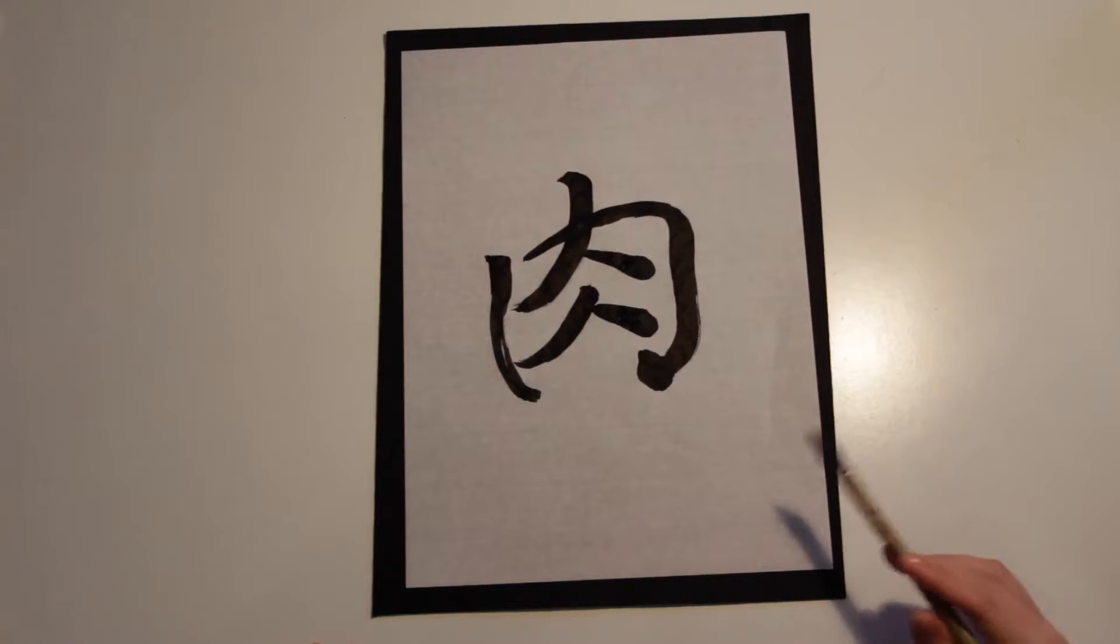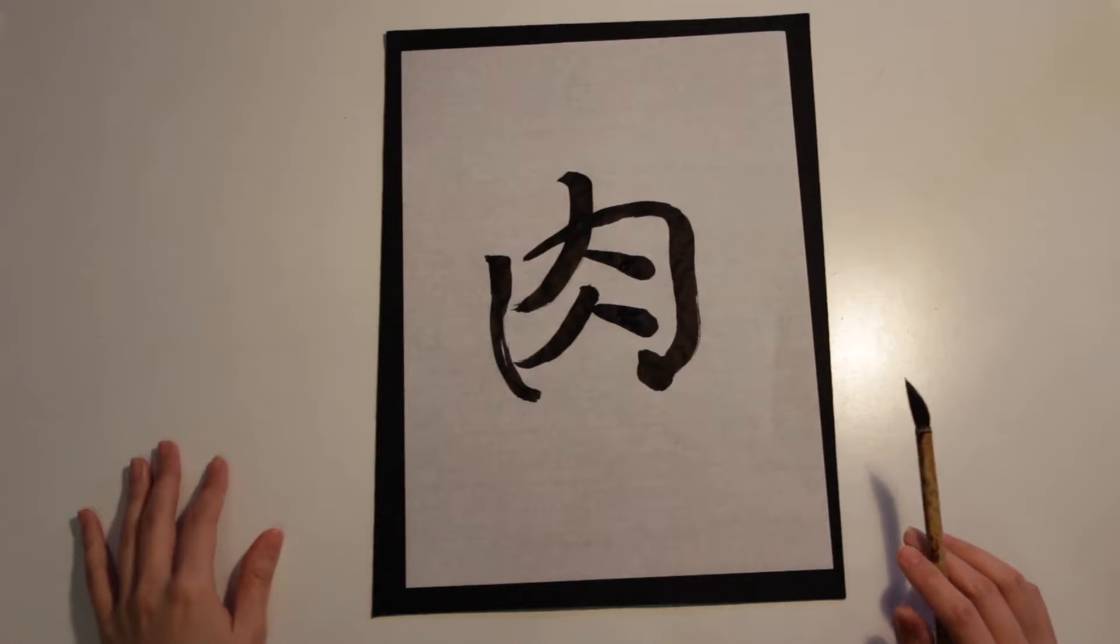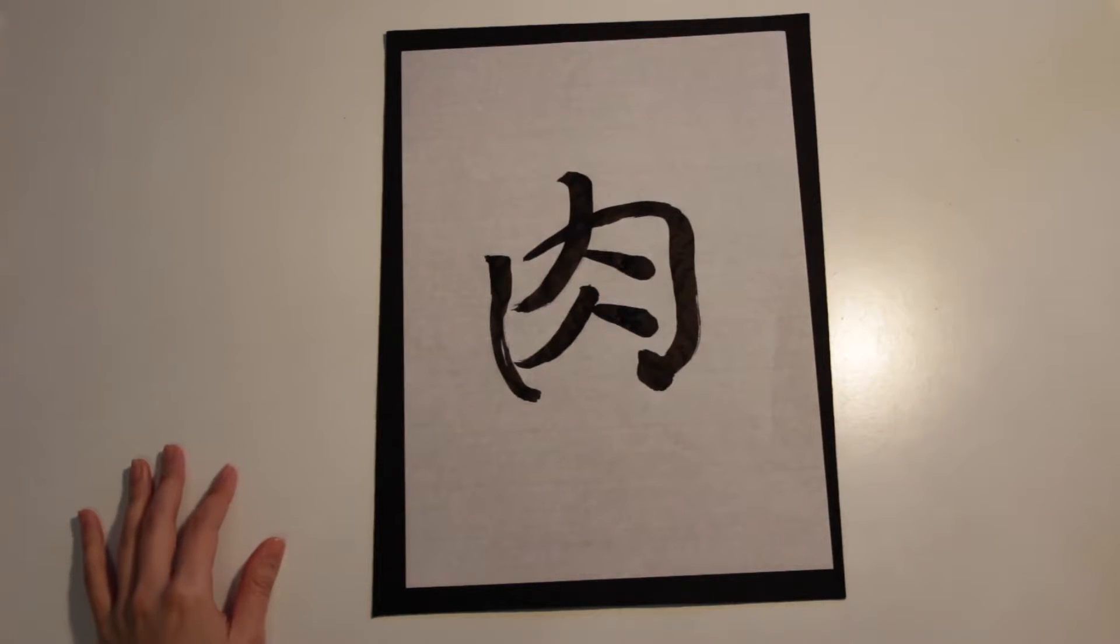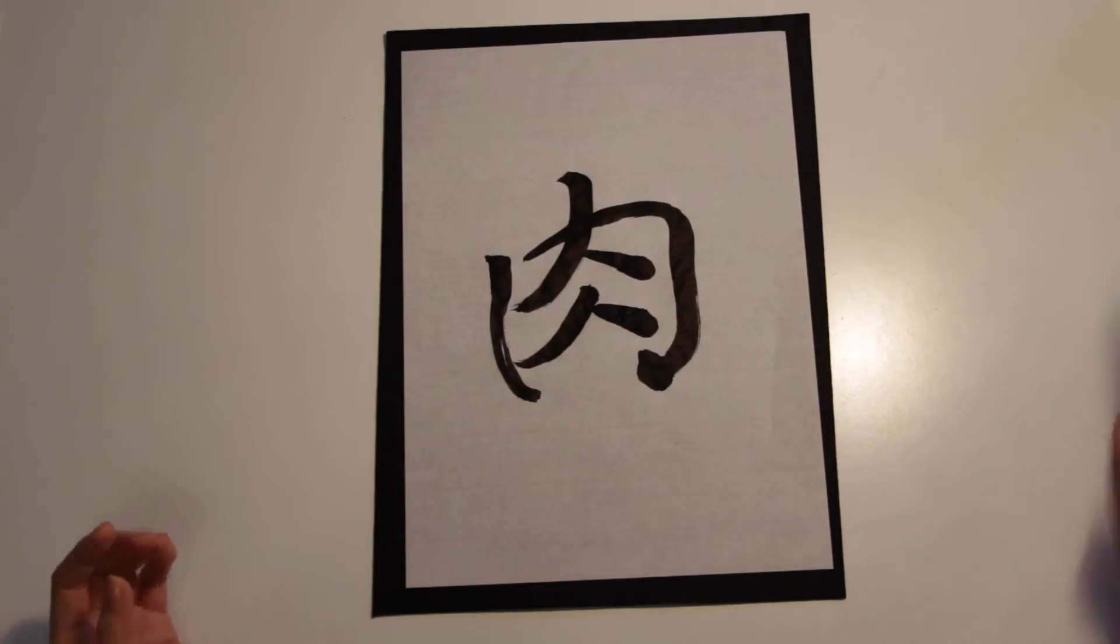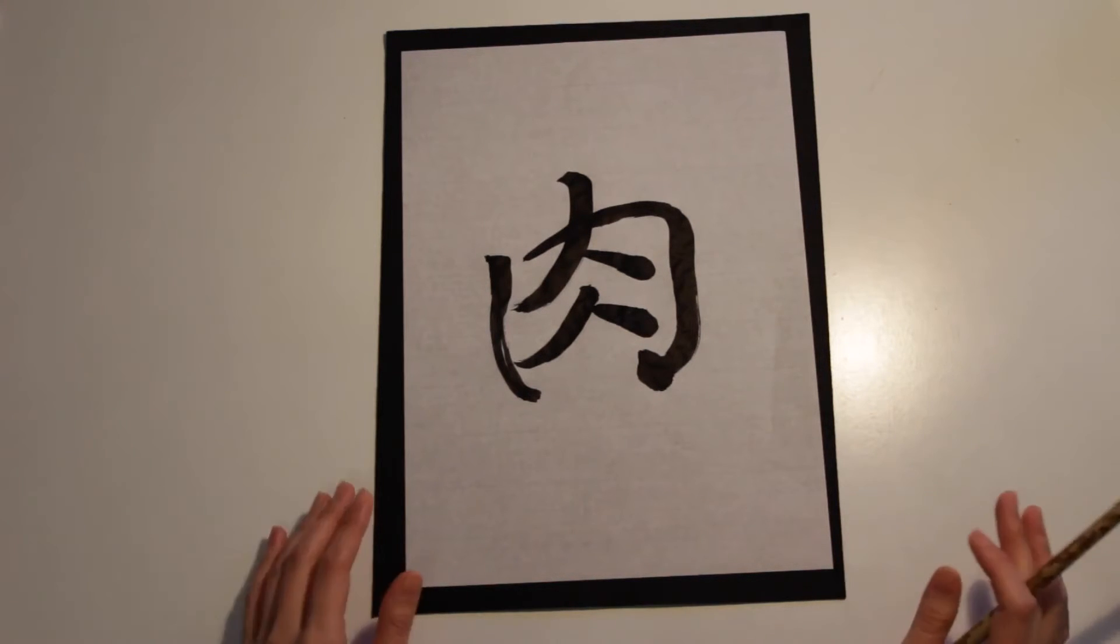This is meat. It's funny because my friend... because chicken is chicken meat, right? And tori is bird. I mean, bird is tori.